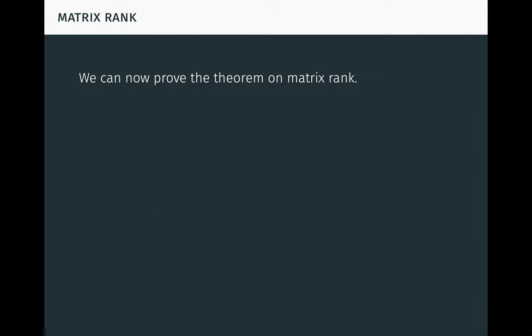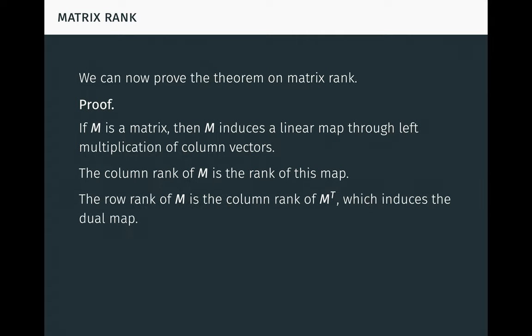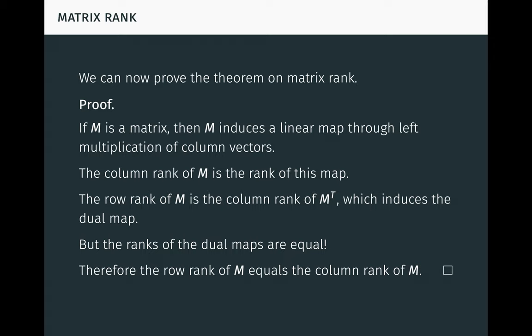With this result in hand, we can now prove the theorem on matrix rank from earlier. If M is a matrix, then M induces a linear map through left multiplication of column vectors. It's easy to see that the column rank of M is the rank of this map. The row rank of M is the column rank of M-transpose, which induces the dual map by the previous result. But the ranks of dual maps are equal, as we know. Therefore, the row rank of M equals the column rank of M, and the proof is complete. In essence, this proof shows us that the row rank and column rank of a matrix are equal because the rows are dual to the columns, and the relationship of duality is a very natural one.